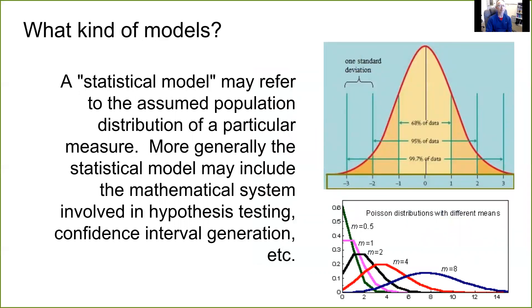Now we're getting to something more like data science. A statistical model can refer to the assumed population distribution of a particular measure, height, weight, income, etc. More generally, the statistical model might include more than just that distribution, but the mathematical system involved in hypothesis testing, for example, confidence interval generation. These are the statistics based processes that are used to try to interpret information and knowledge from data. And we have here in the figures a normal distribution, otherwise known as Gaussian, and on the bottom a Poisson distribution with varying parameters.